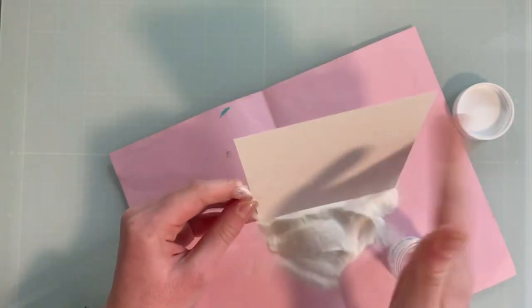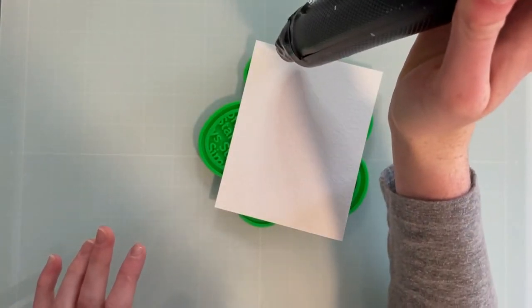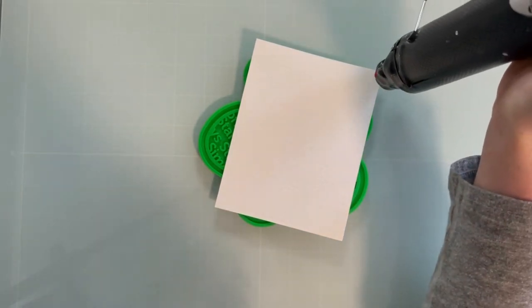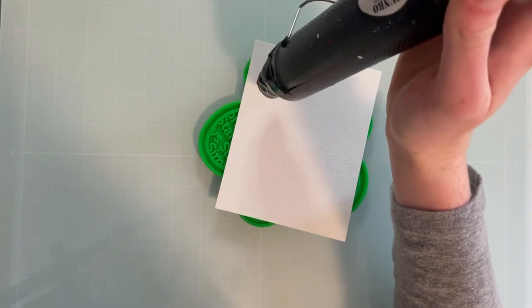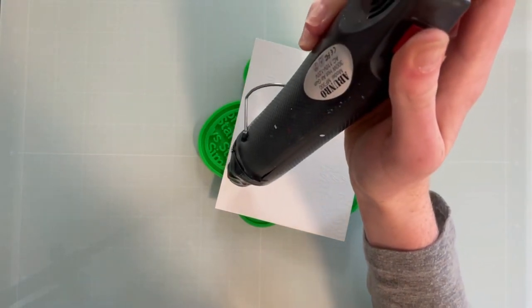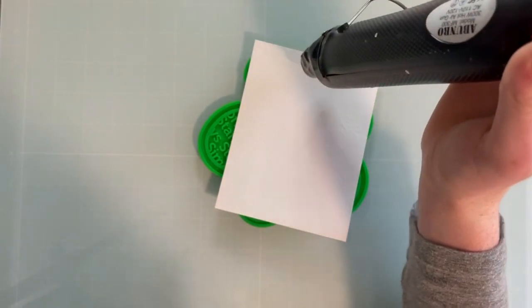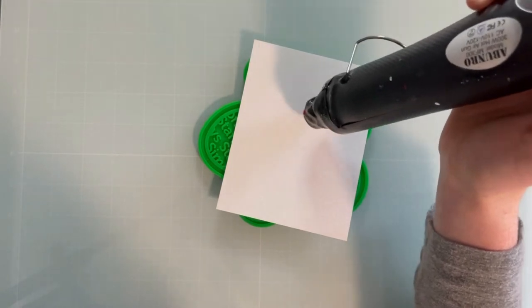I think I'm using clear embossing powder for this one, but you can also use white if you want for this technique. It really doesn't matter. Even if you wanted, you could use a colored embossing powder or a gold or a silver, and this would look really cool as well. I just decided to use clear today. I'm going to heat set that.